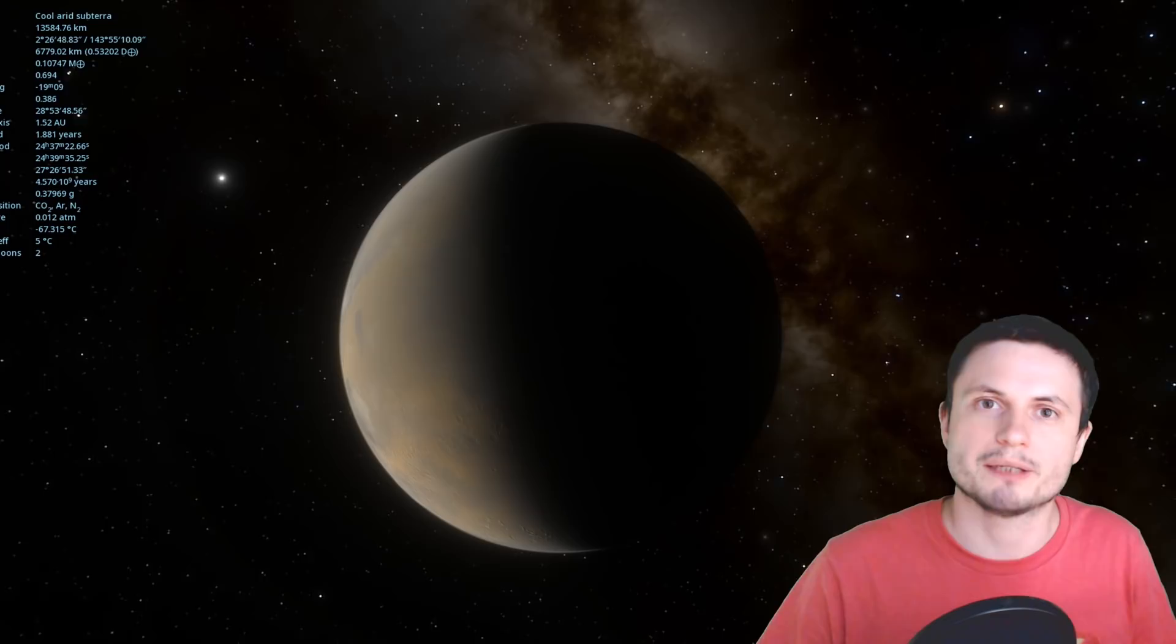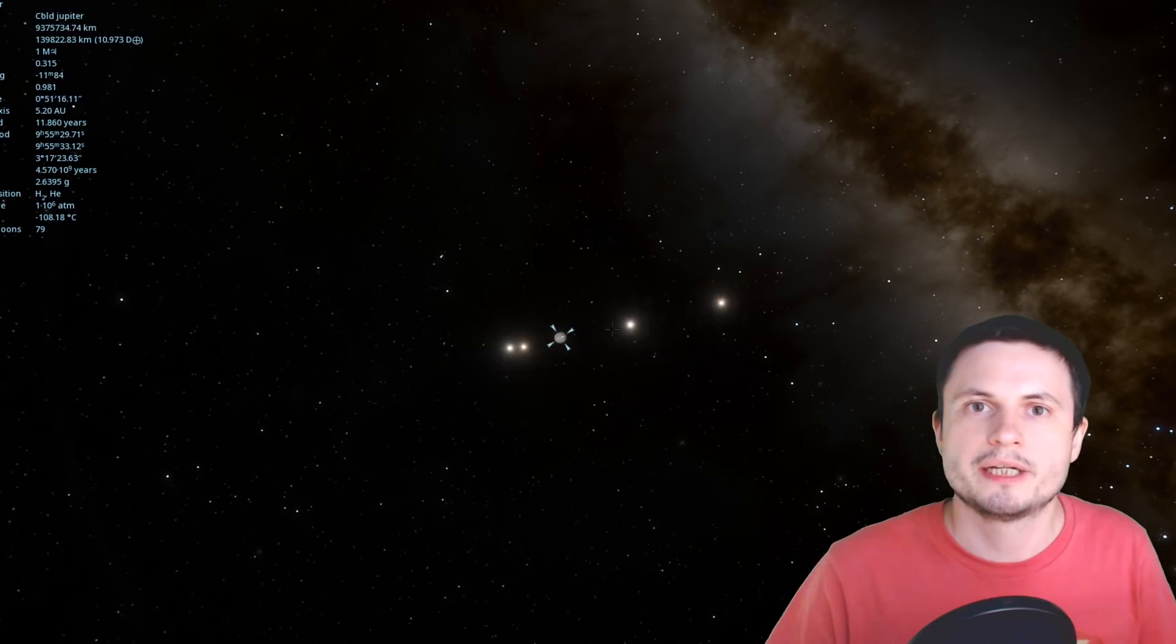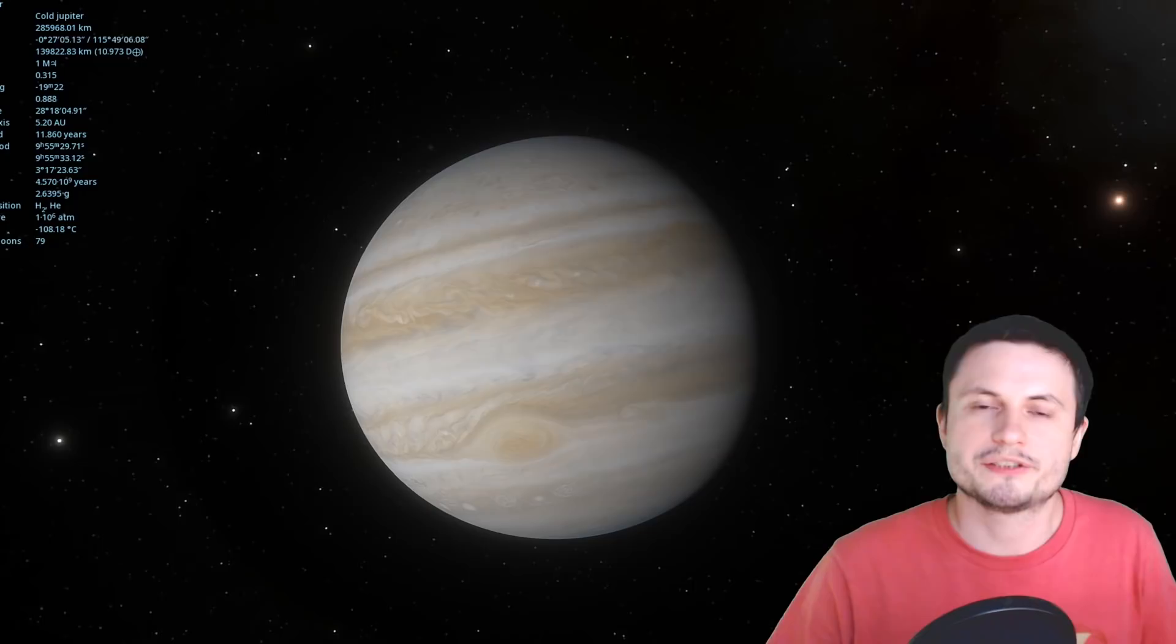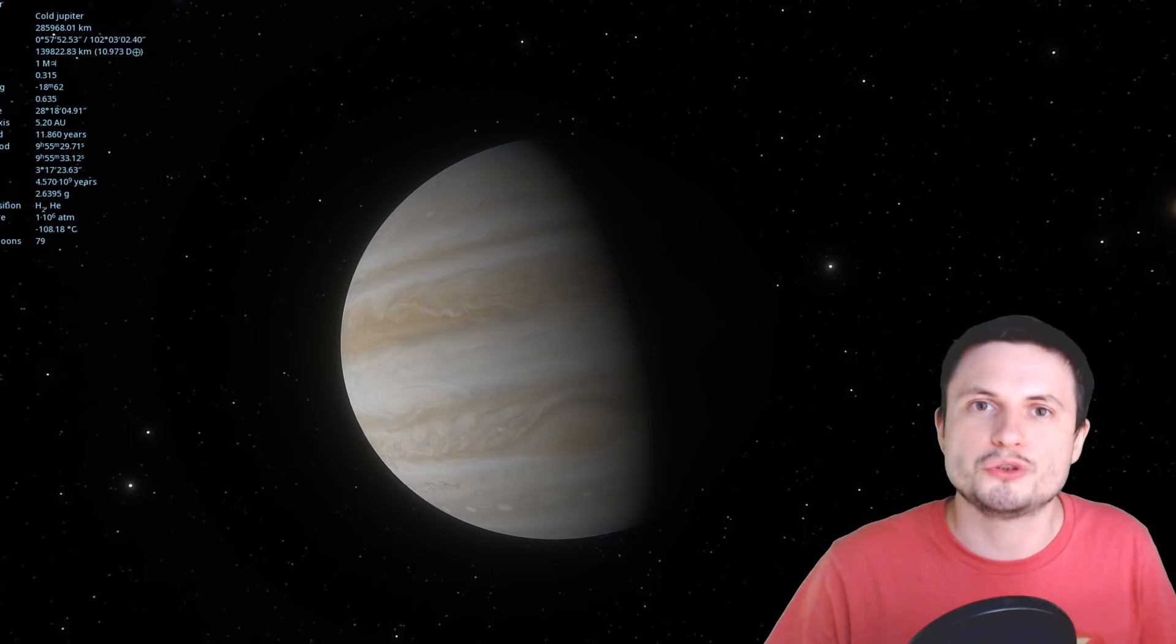And the farther we move from the Sun, the less effective these solar sails become. So basically, just like with solar panels, by the time we reach planets like Jupiter, the actual effectiveness is only about 2% now, which means that they become practically useless.